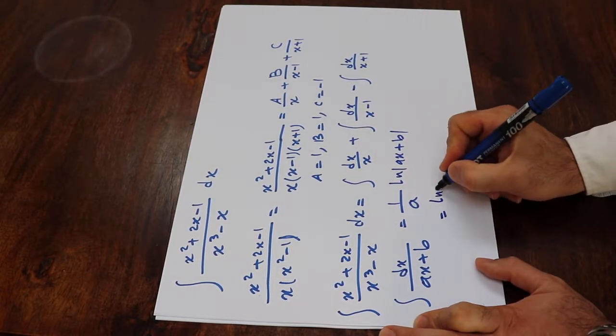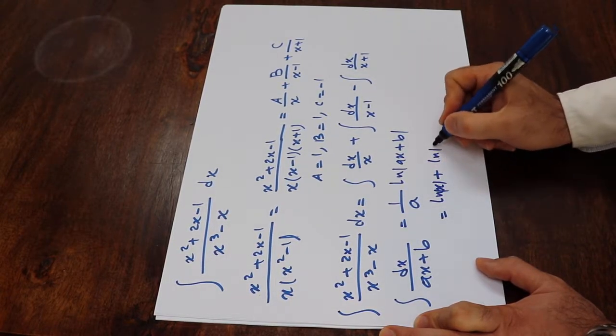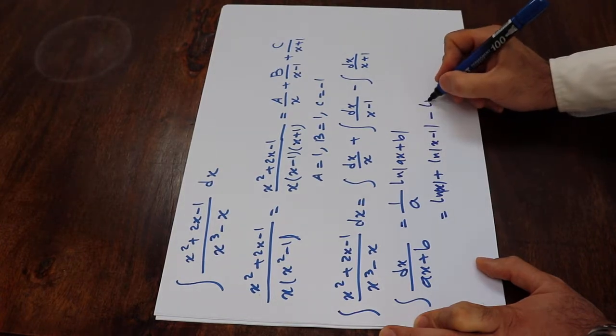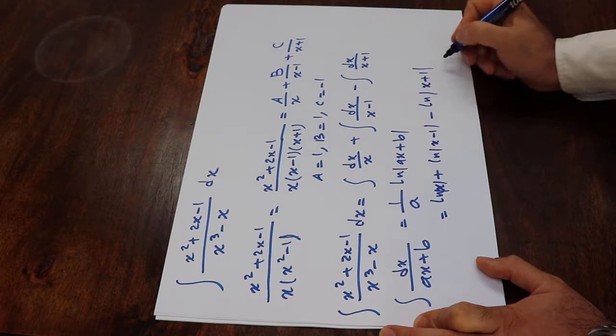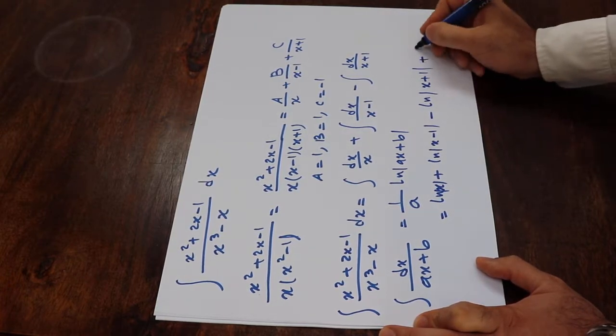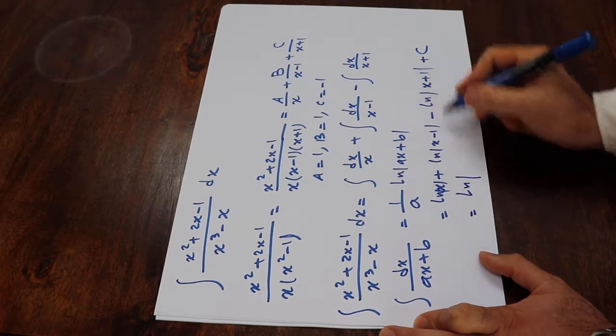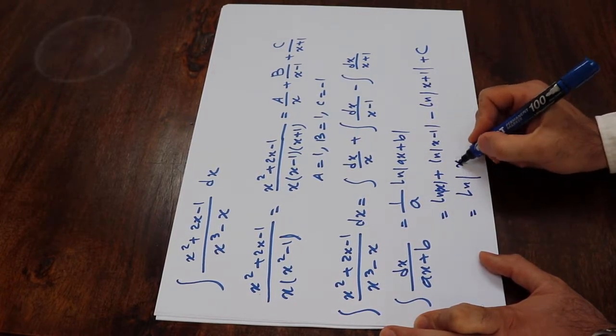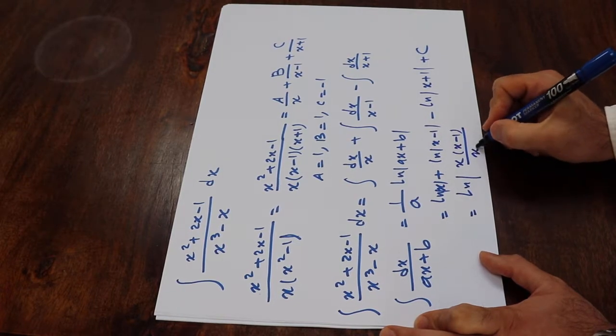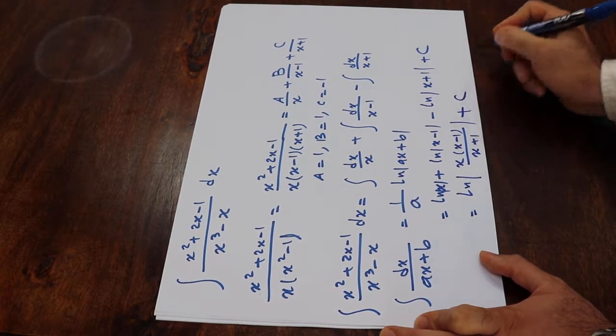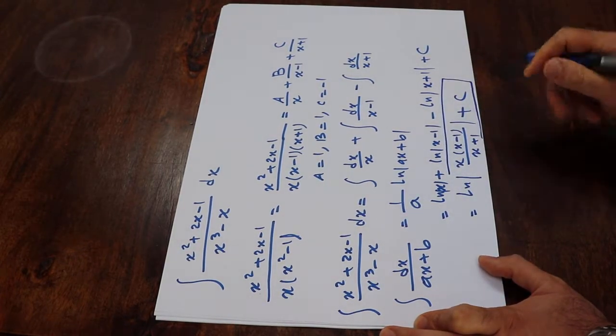which will be equal to ln x plus ln x minus 1 minus ln x plus 1 plus C, which is the constant of integration. You can rewrite this one as well as ln, you can basically combine all this, that will be x times x minus 1 divided by x plus 1 plus C, which is the constant of integration. And that is the solution to our integral.